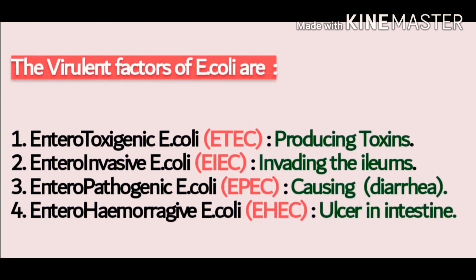The virulence factors of E. coli include: Enterotoxigenic E. coli, which produces toxins; Enteroinvasive E. coli, which helps E. coli invade the ileum; Enteropathogenic E. coli, which causes diarrhea; and Enterohemorrhagic E. coli, which causes ulcers in our intestine.